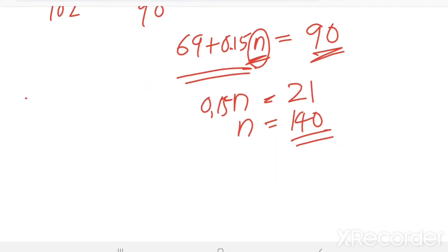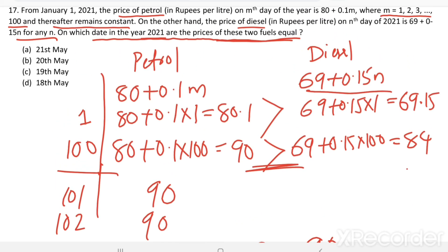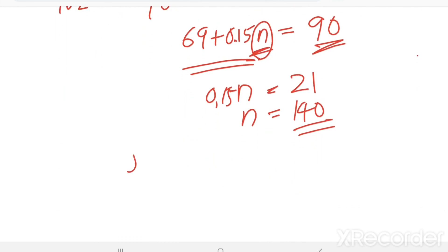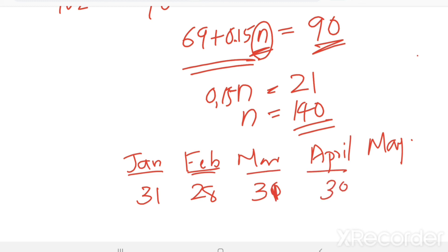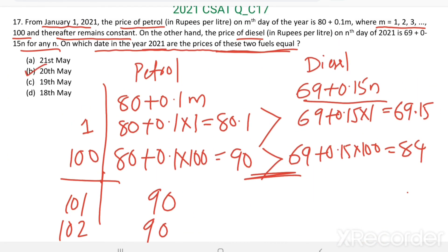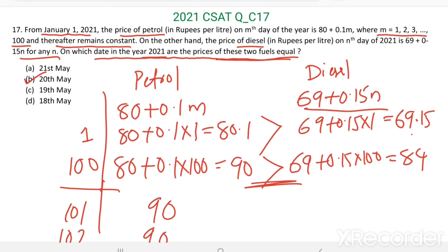We have to find which date corresponds to the 140th day from January 1st. In January there are 31 days. In February 2021, there are 28 days. In March, 31 days. In April, 30 days. Adding all these, we get 120. Then 20 more days into May gives us 140. So on 20th May, the price of petrol will be equal to that of the price of diesel.